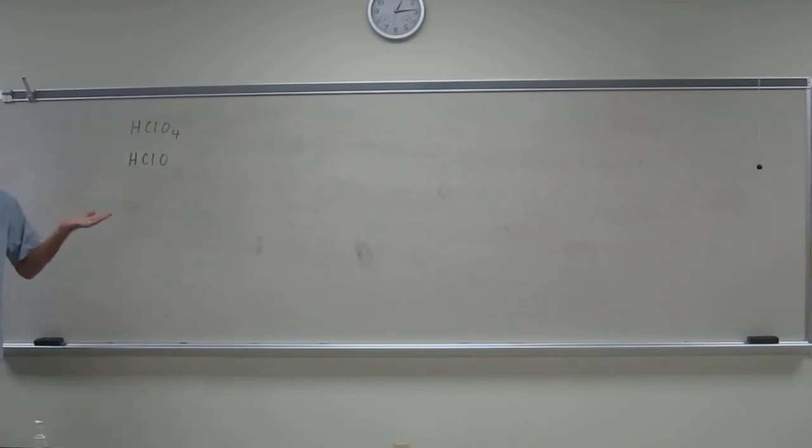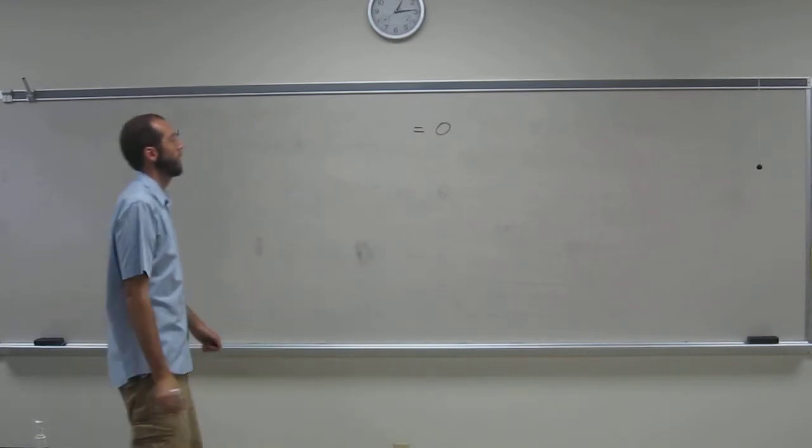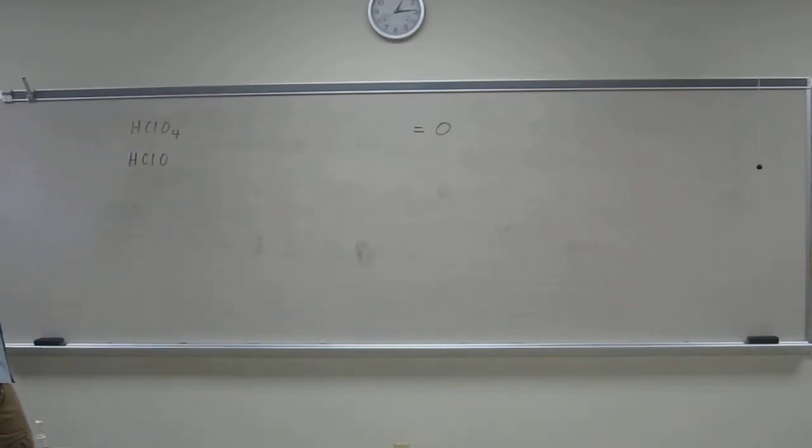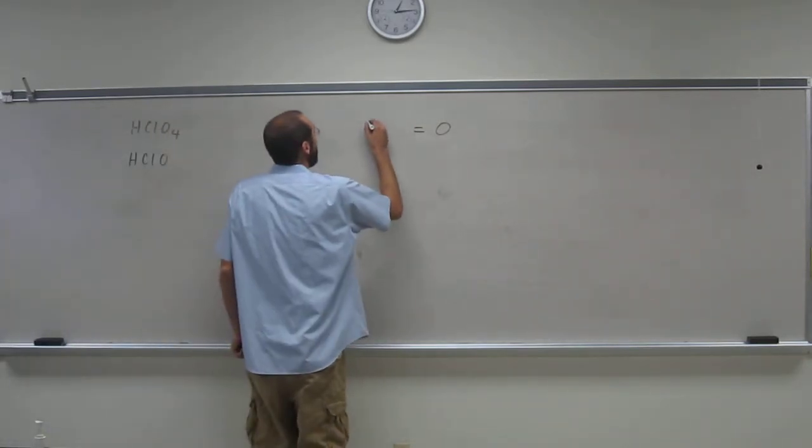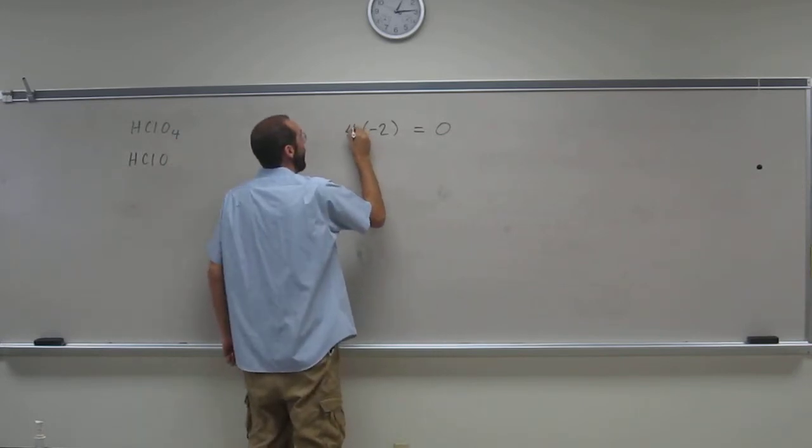So, what do we know already about the top one, or both of them? It's going to be neutral, so the whole thing's going to be equal to zero. These oxygen's oxidation state are negative two. And how many do we have? Four of them.